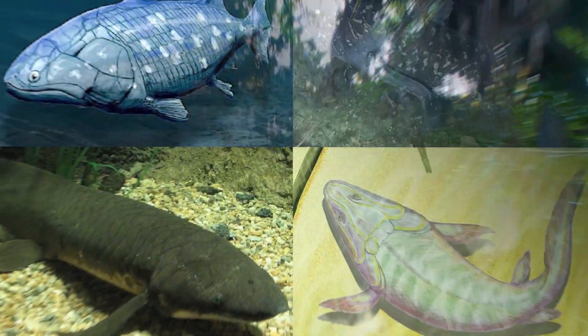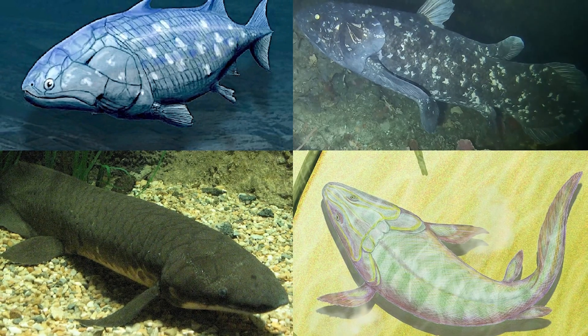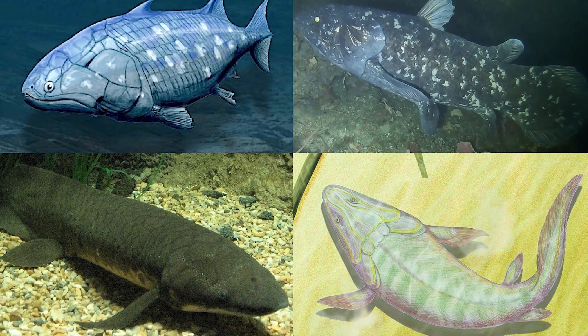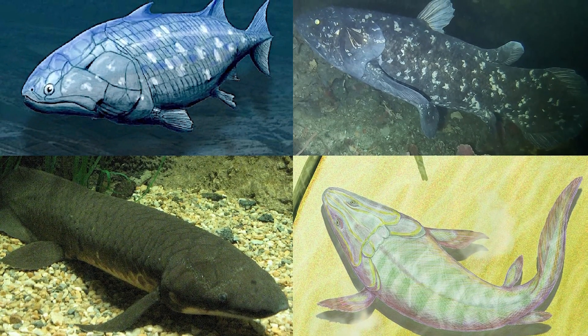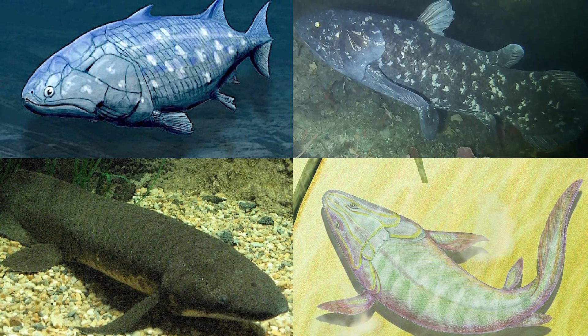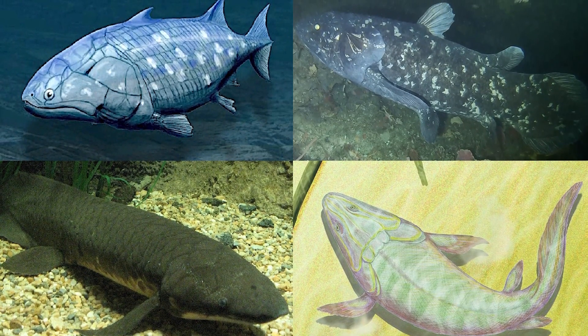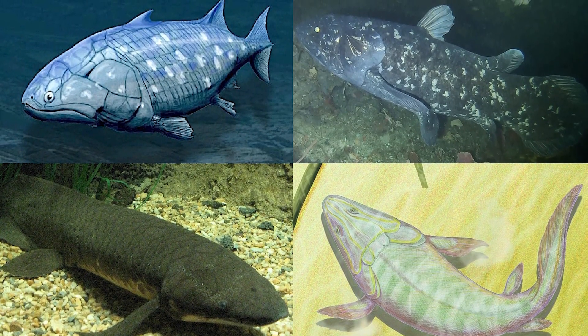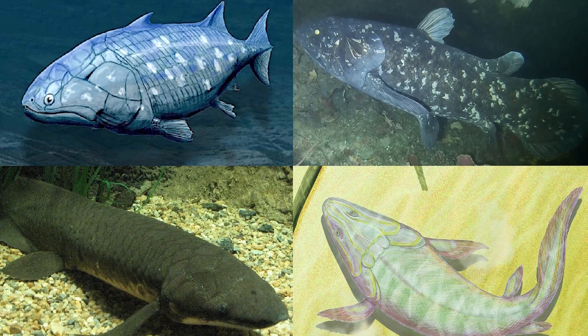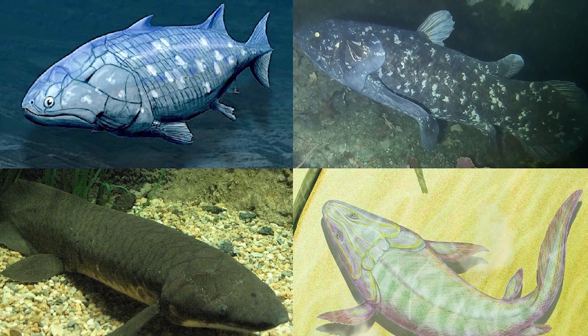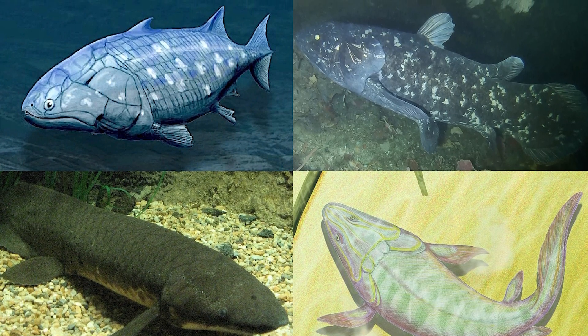By 390 million years ago, a group of sarcopterygians, or lobe-finned fishes, started to develop interesting adaptations.